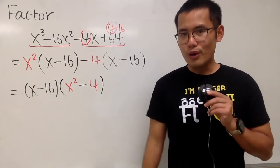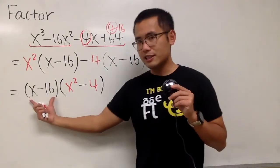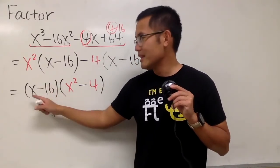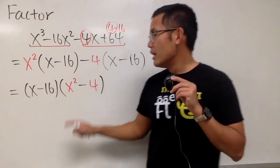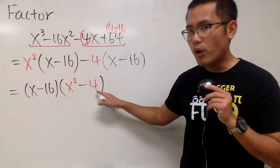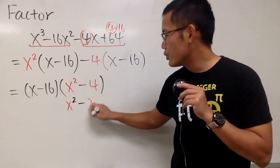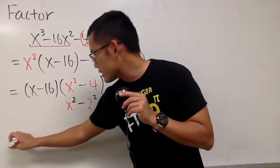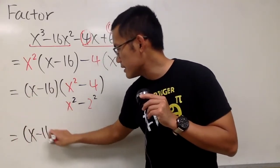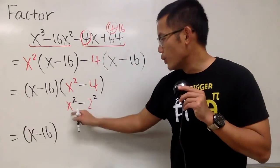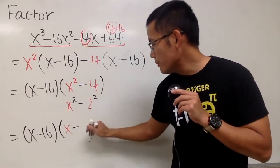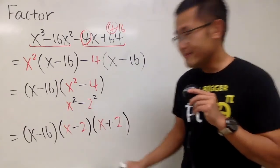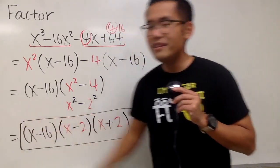Can we do more? Yes. Can we factor x minus 16? No — x to the first power minus 16 cannot be factored further. However, x squared minus 4 equals x squared minus 2 squared — use the difference of two squares formula. So the final answer is x minus 16 times x minus 2 times x plus 2.